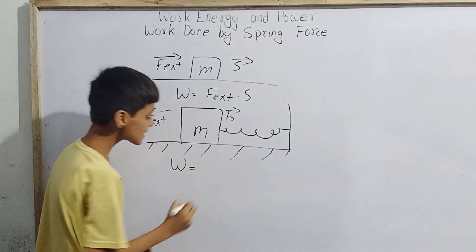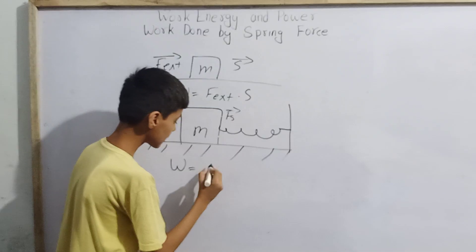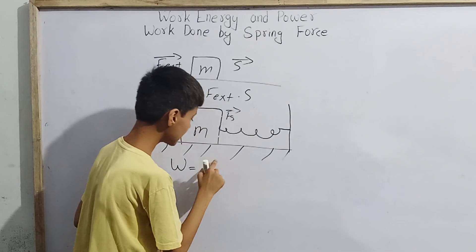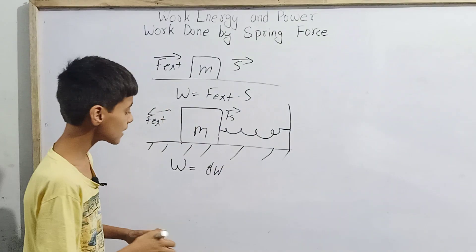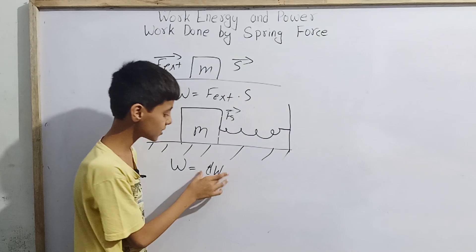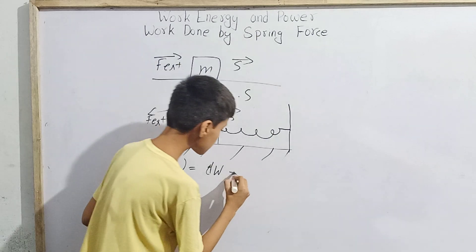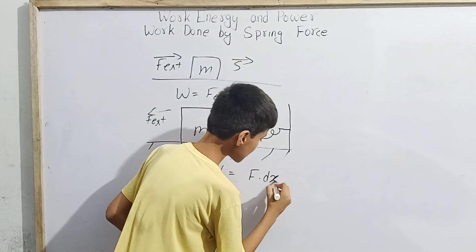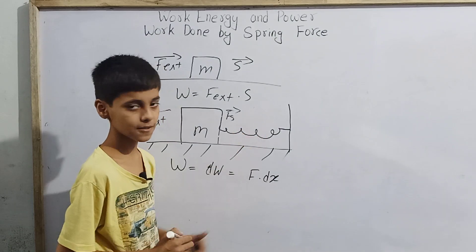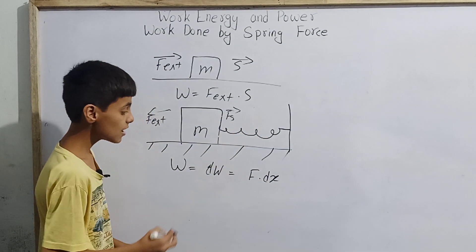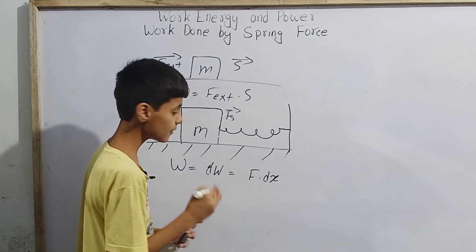To find that, we take a very small displacement dx. For this small displacement, the work done is dW, whose magnitude is F · dx, where F is our spring force. So we write dW = F · dx.